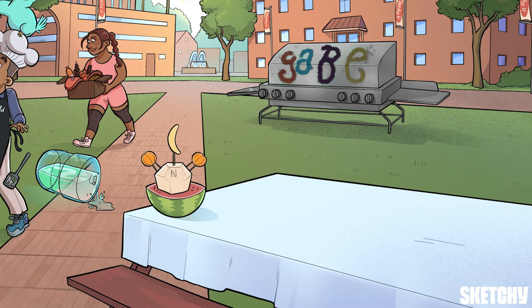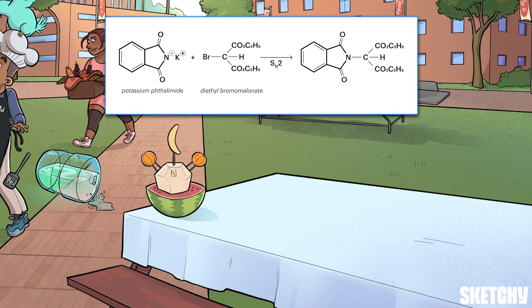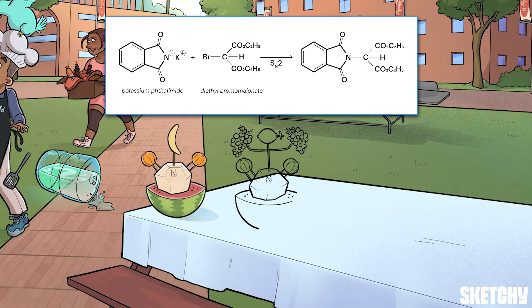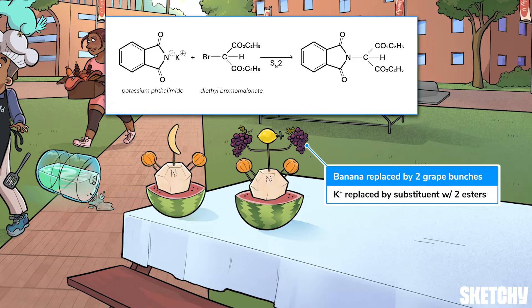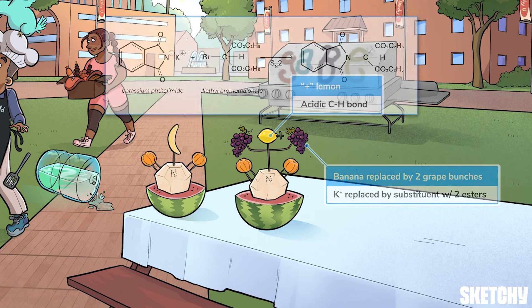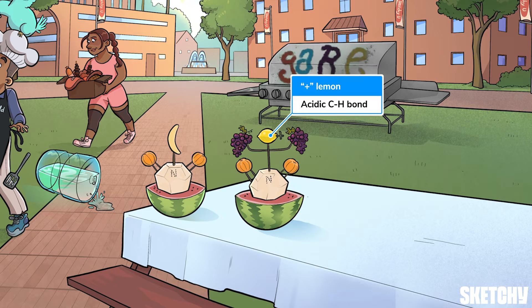The first thing that happens in the Gabriel synthesis is that potassium phthalimide undergoes an SN2 reaction with diethyl bromomalonate. This results in the potassium on the ring structure being swapped out for a chunky substituent that contains two esters coming off a central carbon. That's why, on this next fruit arrangement, the banana has been replaced by a chunkier addition that includes two big grape bunches to represent the two esters. Also, see that lemon with the plus sign stem? That's a reminder that the hydrogen bonded to the central carbon atom is quite acidic because of resonant stabilization from the esters.